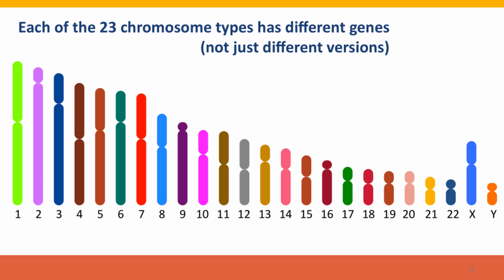Just to refresh and affirm this very important point from the previous lecture: each of the 23 chromosome types in us, or the different chromosomes in any organism, has different genes — not just different versions of genes. The chromosomes are colored here to represent that. We have two versions of the light green chromosome and two versions of the blue chromosome and two versions of each of these chromosomes in our cells, and in the whole population there are many versions of these chromosomes.